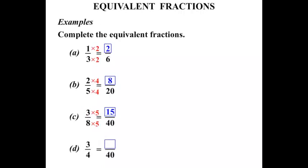3 quarters equals something over 40. Looking at the denominator, 4 has turned into 40 by multiplying by 10. That's right. So we times 10. Timesing 10 on the bottom, we times 10 on the top as well. And 3 times 10 is 30.